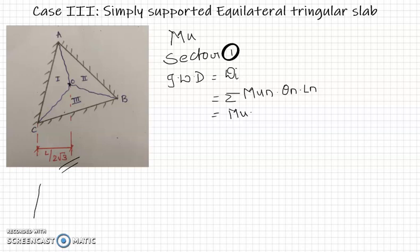This is delta, so it is opposite upon adjacent. So it will be delta upon L upon 2 root 3, multiplied by ln which is the length L. This particular side is considered as length L. As it is equilateral, all three sides are same, that is L.